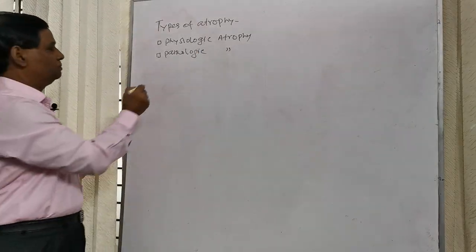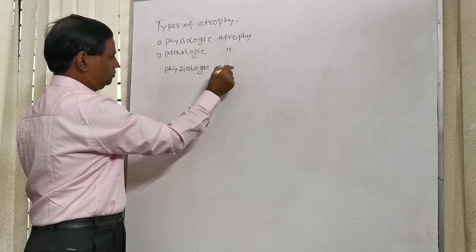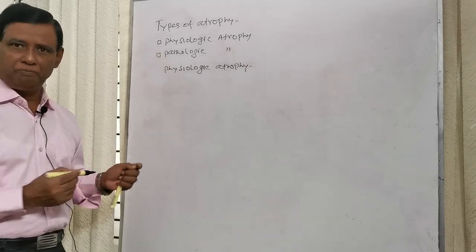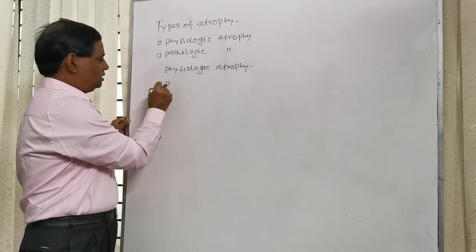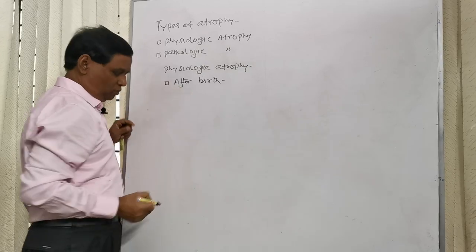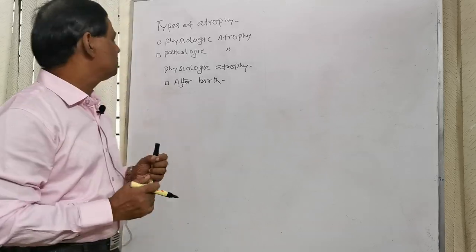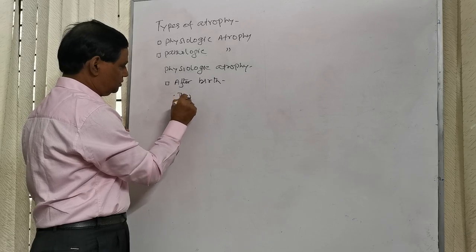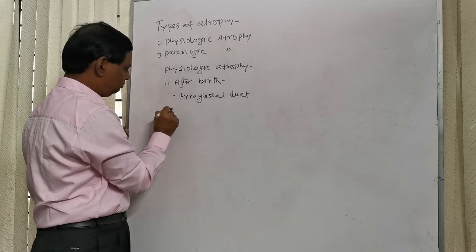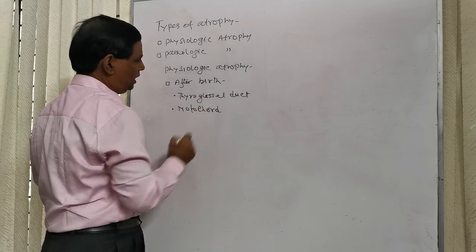Now, come to physiologic atrophy. We can cite an example of physiologic atrophy. Physiologic atrophy after birth: we know that after birth, gradually the thyroglossal duct and notochord undergo atrophy.